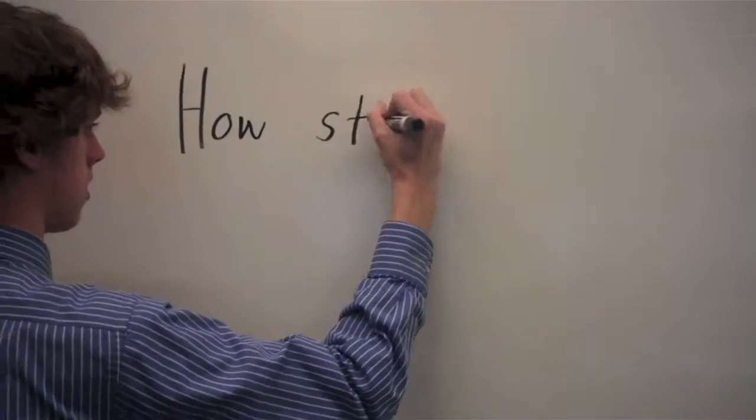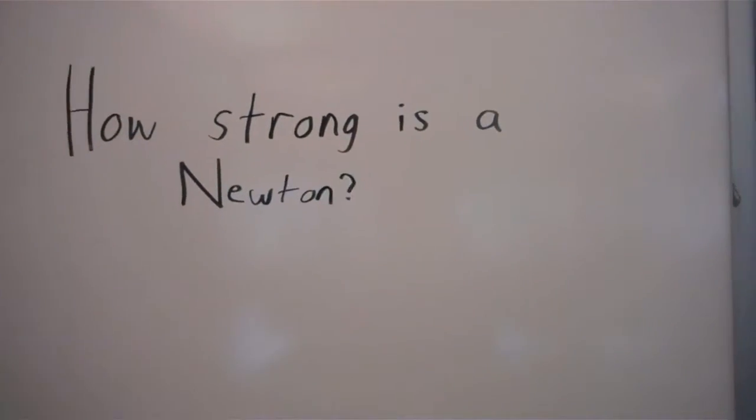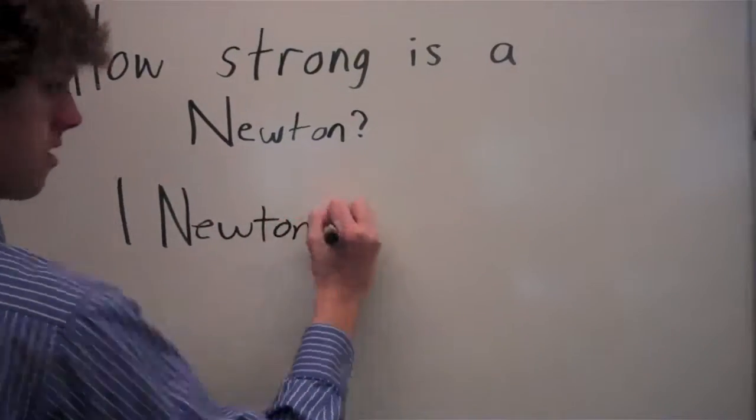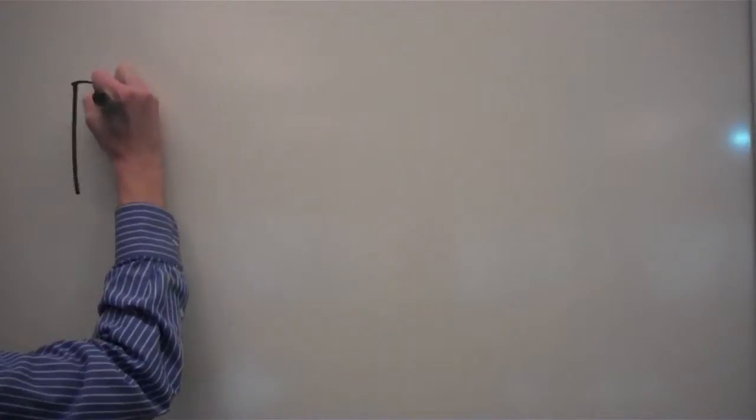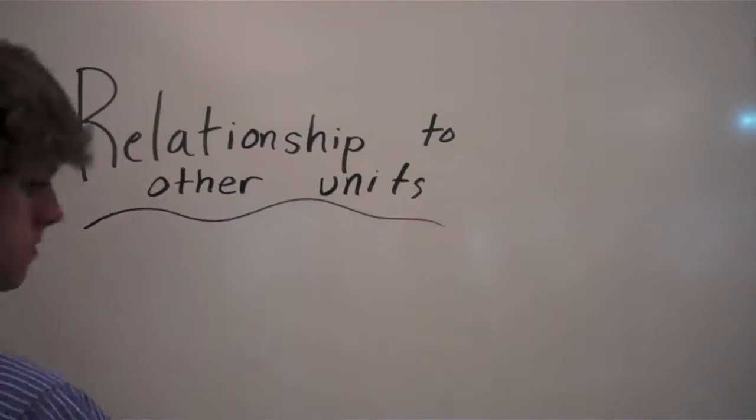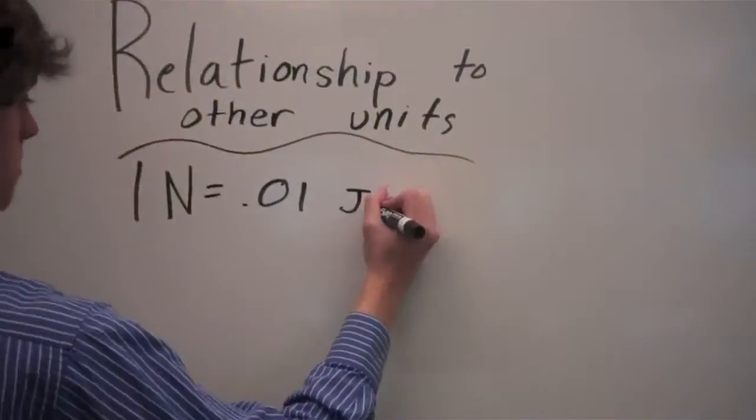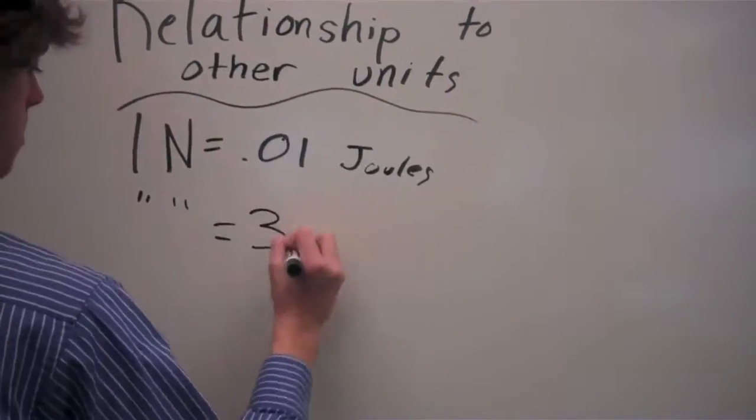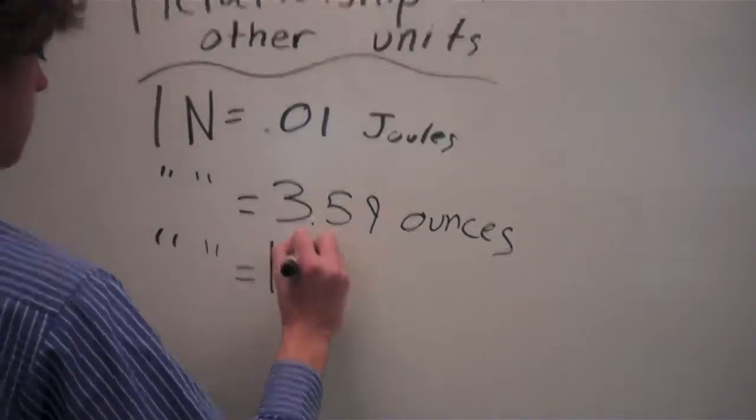How strong is a Newton, you may ask? A Newton is .225 pounds. One Newton also equals .01 joules, 3.59 ounces, and 101.972 grams.